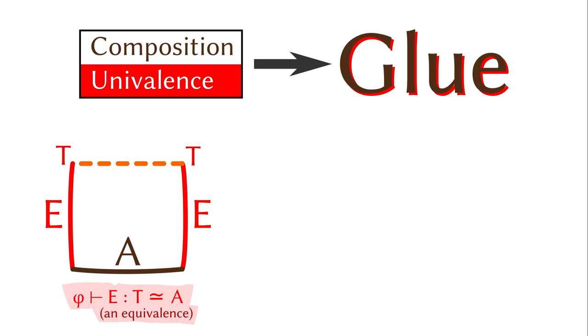So the E here is an equivalence between some type T and the bottom type A under the constraint phi. We are going to write this type as glue, taking this box as the parameter.